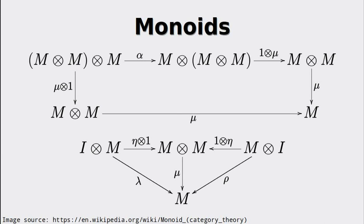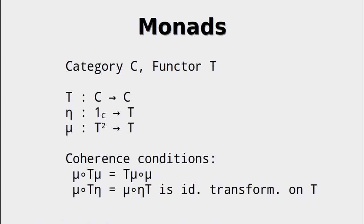We can always end up at the single element. Keep these properties in mind, because now we are talking about monads. A monad is a category C and a functor T which goes from the category to itself — thus T is called an endofunctor. We also have two transformations, eta and mu, that seem very similar to the definition of monoids. Eta maps the identity functor to T; the identity functor simply maps every object to itself. Eta now maps this functor to T. Mu maps two applications of the functor T to a single application of T.